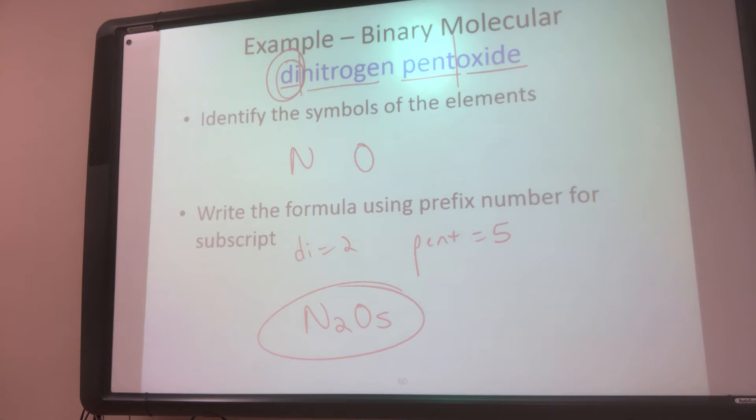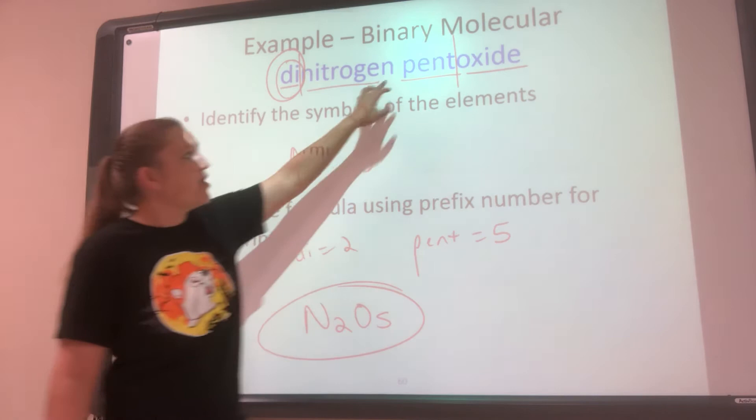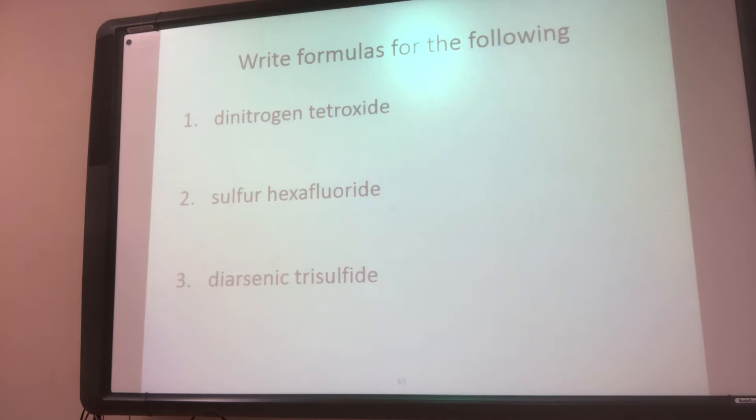So if it's two and four, you don't reduce it down. You write exactly whatever it says. So dinitrogen, two nitrogens, pentoxide, five oxygens. All right, let's do some more.